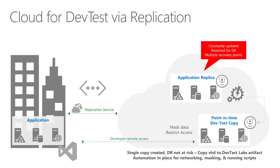So using the capabilities we have with Azure replication service, we are going to make an application replica of the environment of that VM. We're going to constantly update that and we're going to reserve this particular replica for disaster recovery purposes, so we're going to have multiple recovery points that we can pull from in the event of a true disaster. However, for this particular scenario, what we're going to do is make a replica of that environment — a point-in-time DevTest copy — that we're then going to allow our developers remote access to.